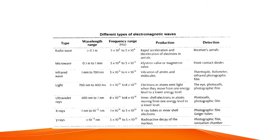X-rays have wavelengths from 1 nanometer to 10⁻³ nanometers, with frequencies from 1 × 10¹⁶ Hz to 3 × 10²¹ Hz. They are produced by X-ray tubes or by electrons, and are detected by photographic films and Geiger tubes.